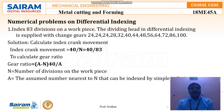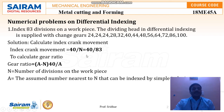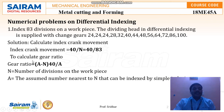First, we need to find out the index crank movement. The formula for index crank movement is 40/N, where N is the number of index divisions. The index divisions are given as 83, so the index crank movement is 40/83. Now to find the gear ratio, the formula is: (A − N) × 40 / A, where N is the number of divisions on the work piece and A is the assumed number nearest to N.